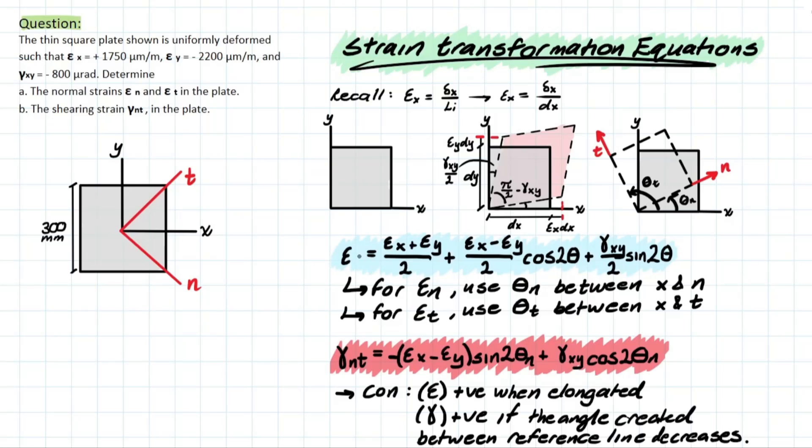So we have a normal strain, and we have it about the n axis and the t axis, respectively. And the only difference is going to be that theta that we're using in the equation. And all the other variables are given to us in the problem.